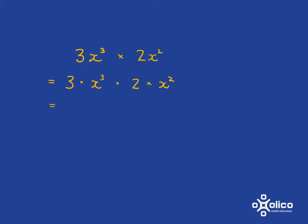This is 3 times x cubed, this is 2 times x squared. So we've just got all these things multiplied together. Now we want to work it out. We're going to say 3 multiplied by 2, that gives me 6.